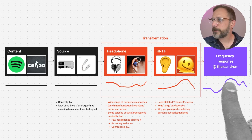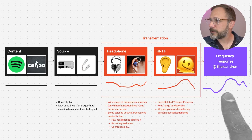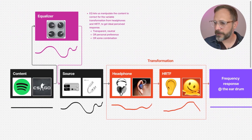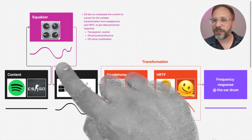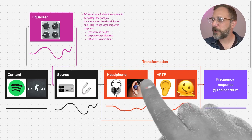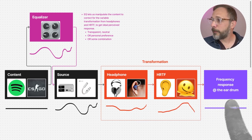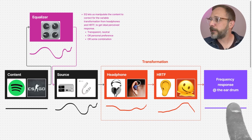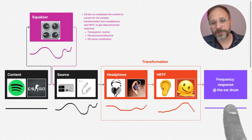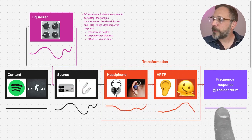This idea of frequency response at the eardrum is starting as a flat signal, getting transformed by the headphone and your HRTF, and by the time it reaches your eardrum it no longer looks the way it started. But this is where EQ comes into play. Let me scroll over to this other version of the diagram where I've inserted EQ. What EQ lets us do is take that flat frequency response of the original content and manipulate it in a way that takes into consideration the transformation that's about to occur once that sound passes to your headphone and goes through your own human anatomy. The goal is that by the time the frequency response reaches your eardrum — the thing you actually hear — it's a closer approximation of the original content, closer to a neutral transparent source, or maybe with a little extra bass boost, whatever you prefer.